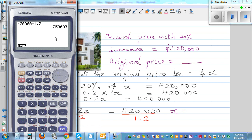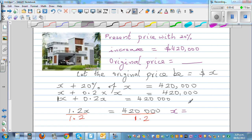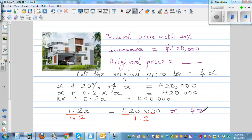So the original price was $350,000. It was $350,000, and it has increased by 20%. So let's just check the answer. So 10% is $35,000. So 20% is $70,000. This is $70,000.